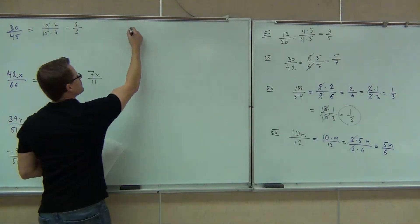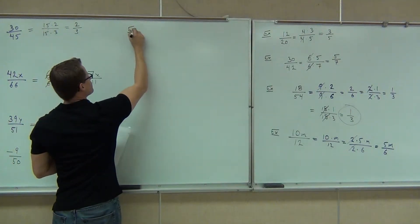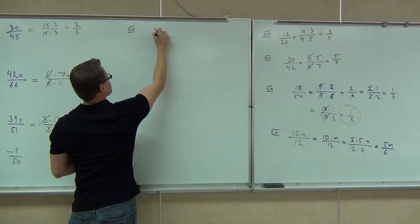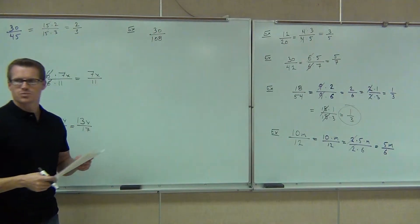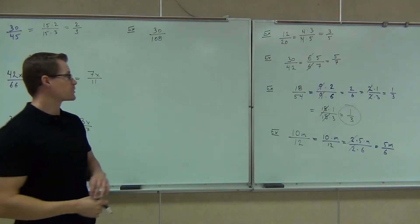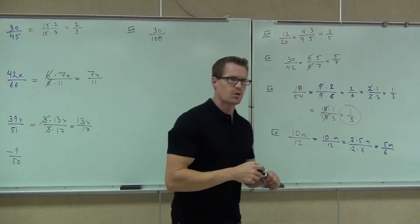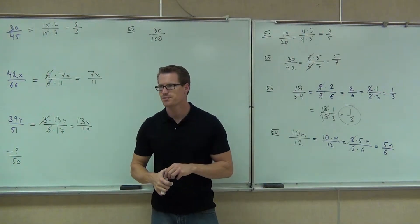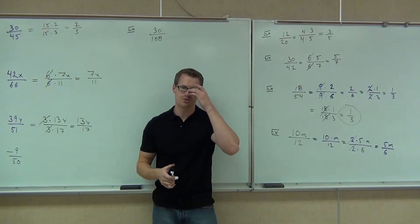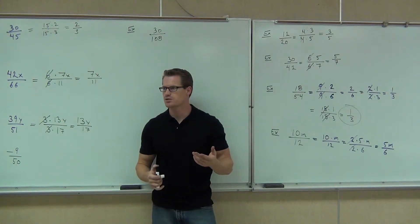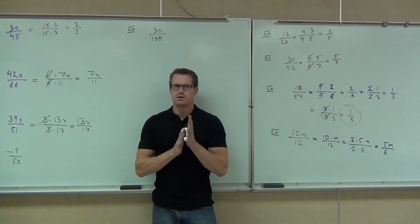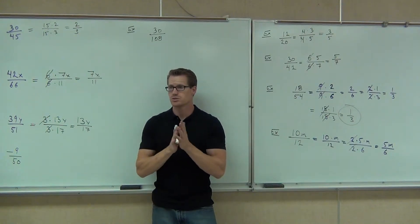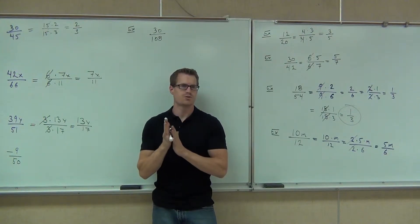Now what happens when we need some pretty heavy-duty fractions, like 30 over 108? We don't want to spend a whole lot of time guessing at numbers, and we don't have a calculator in the first couple tests. So how do we simplify something like this? Well, we could divide out 2s, but I'm going to give you another method — here's a tool for your toolbox.